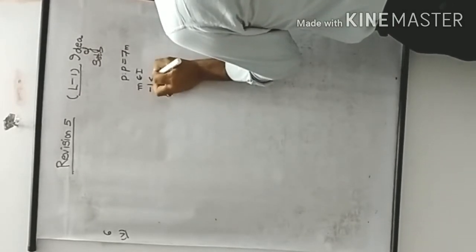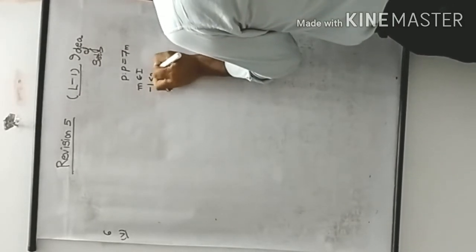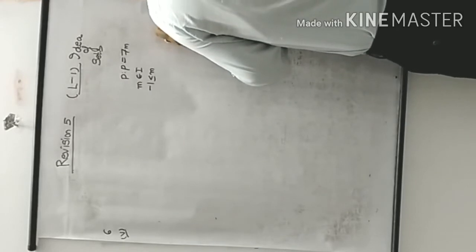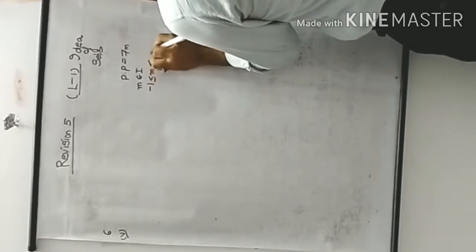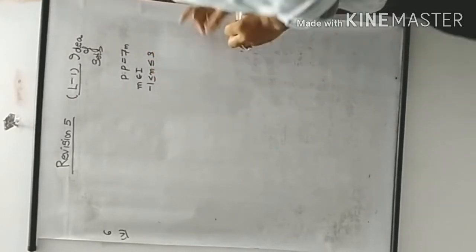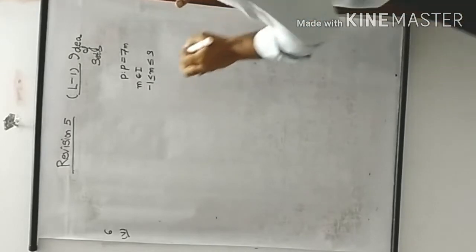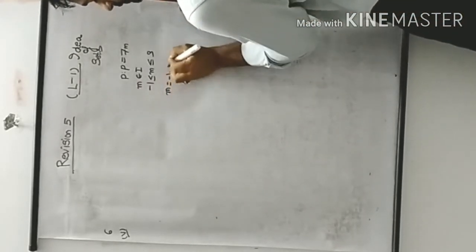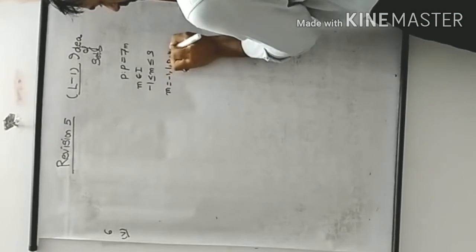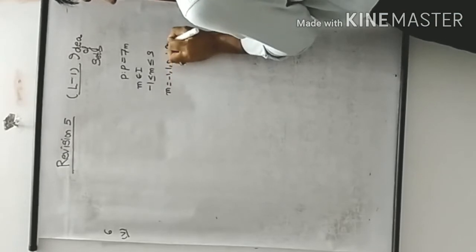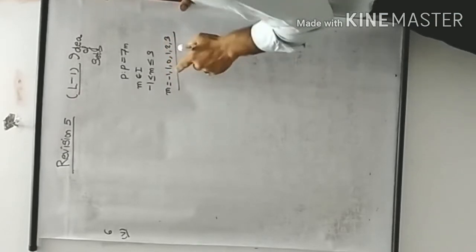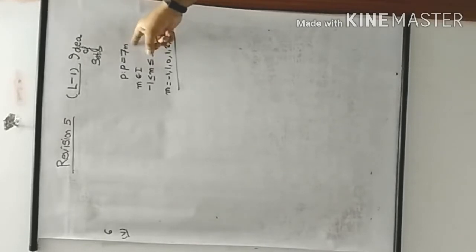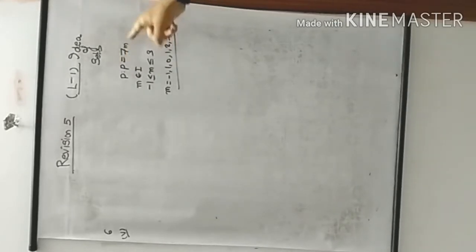So m values go from -1, 0, 1, 2, 3 — these are all values of m. And p = 7m, so substituting each value: p = 7×(-1), then 7×0, 7×1, 7×2, 7×3.